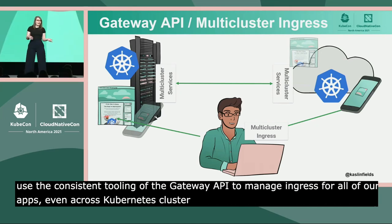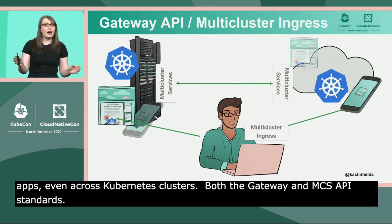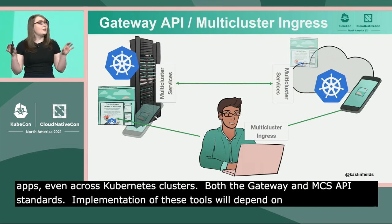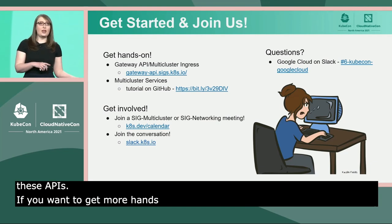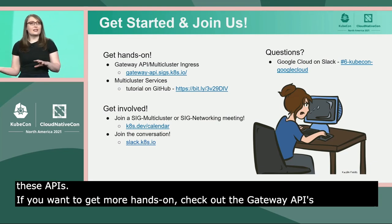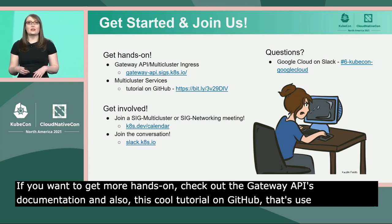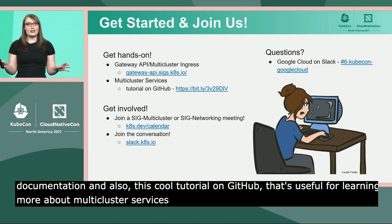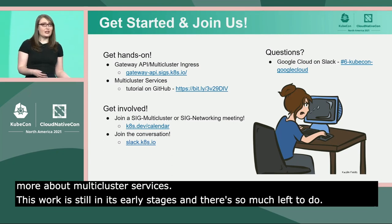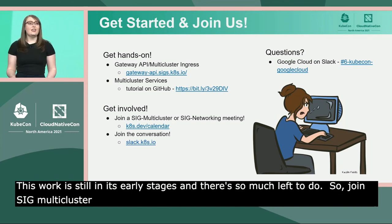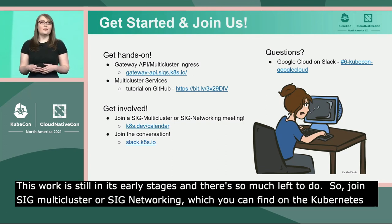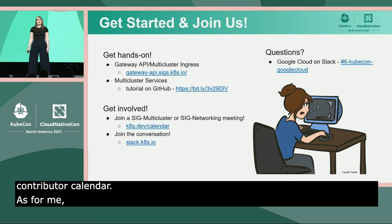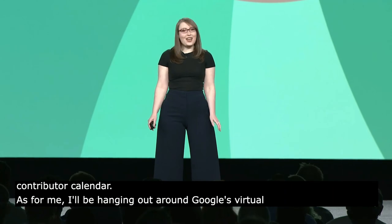Both the Gateway and MCS API standards come from the open source Kubernetes project. Implementations of these tools, though, will depend on your environment, so check the documentation for details on tools and environments that enable use of these APIs. If you want to get more hands-on, check out the Gateway API's documentation and a tutorial on GitHub useful for learning more about multi-cluster services. This work is still in its early stages, so join SIG Multi-cluster or SIG Networking at their regular meetings on the Kubernetes contributor calendar, and reach out on Slack.k8s.io to get involved. I'll be hanging out at Google's virtual booth on Slack in the Google Cloud channel. I hope you all have a great KubeCon!